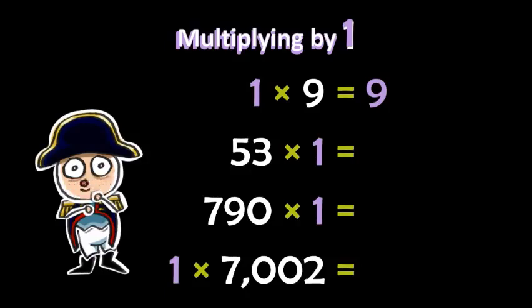53 times one is 53. 790 times one is 790. And one times 7,002 - you guessed it - 7,002.